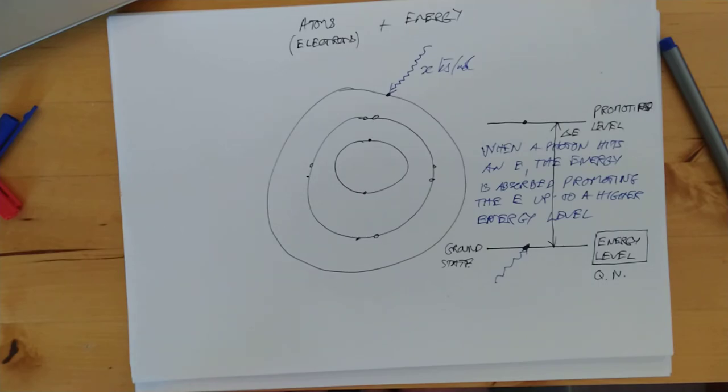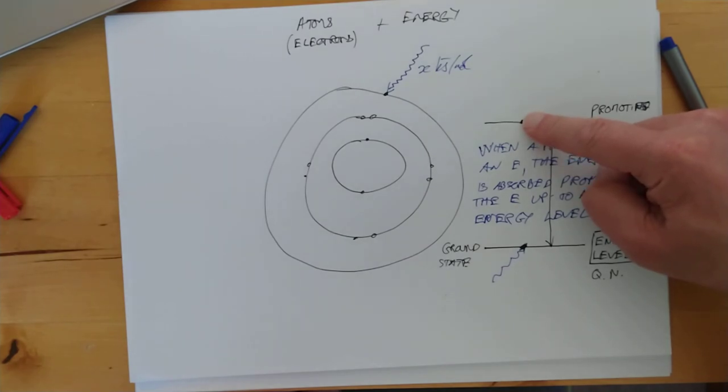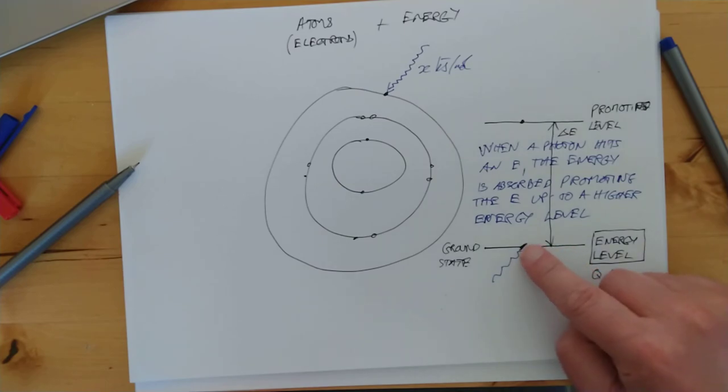And then the next learning outcome is that an atom emits a photon of light energy when the excited electron, this one here, that's what it's referred to, excited electrons, moves from a higher energy level back down to a lower energy level. And the light energy that's emitted by an atom produces a spectrum that's made of a series of lines at discrete energy levels.